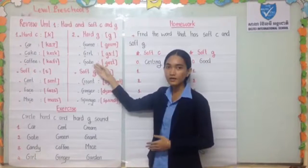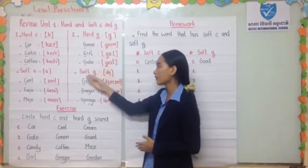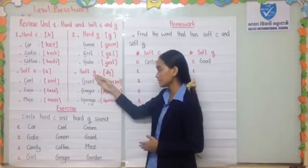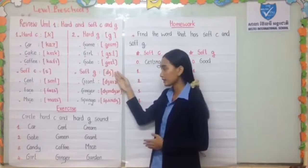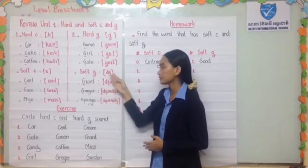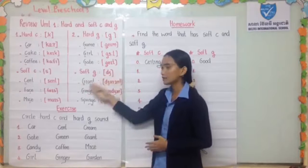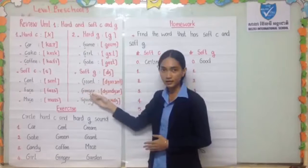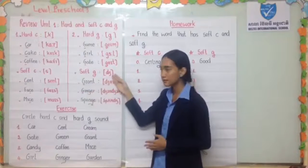And for soft G, it makes a 'J' sound. An example is: Giant.